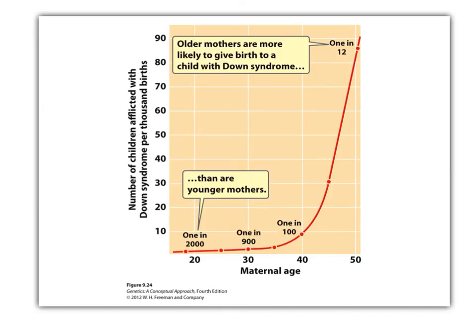Just fun facts about non-disjunctions: they seem to happen more in older mothers. After the age of 35, the incidence of Down syndrome — trisomy 21 — goes up pretty dramatically. Between 40 and 50, that would be exponential — a J-shaped curve. Non-disjunction: not good.